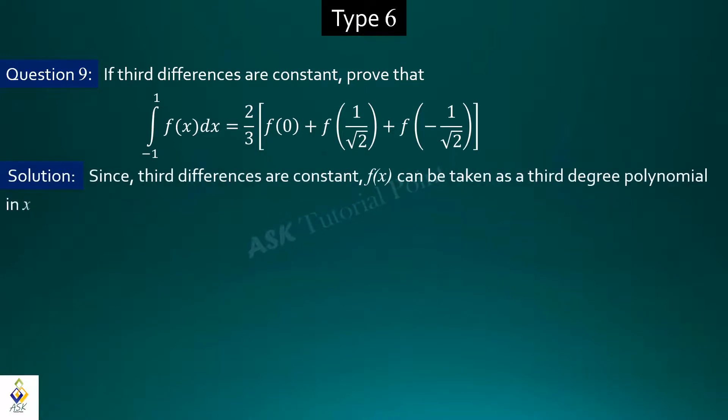Thus, we consider this function as a third degree polynomial where we can write fx is equal to a plus bx plus cx square plus dx cube. Here, left hand side is equal to integration minus 1 to 1 fx dx.